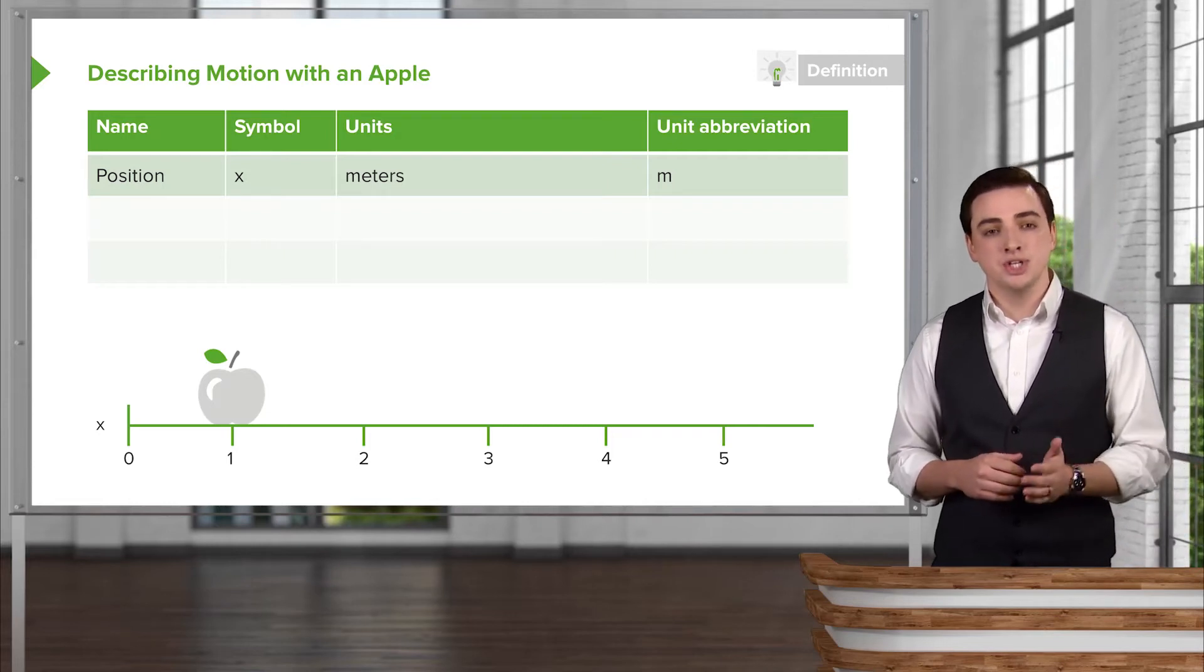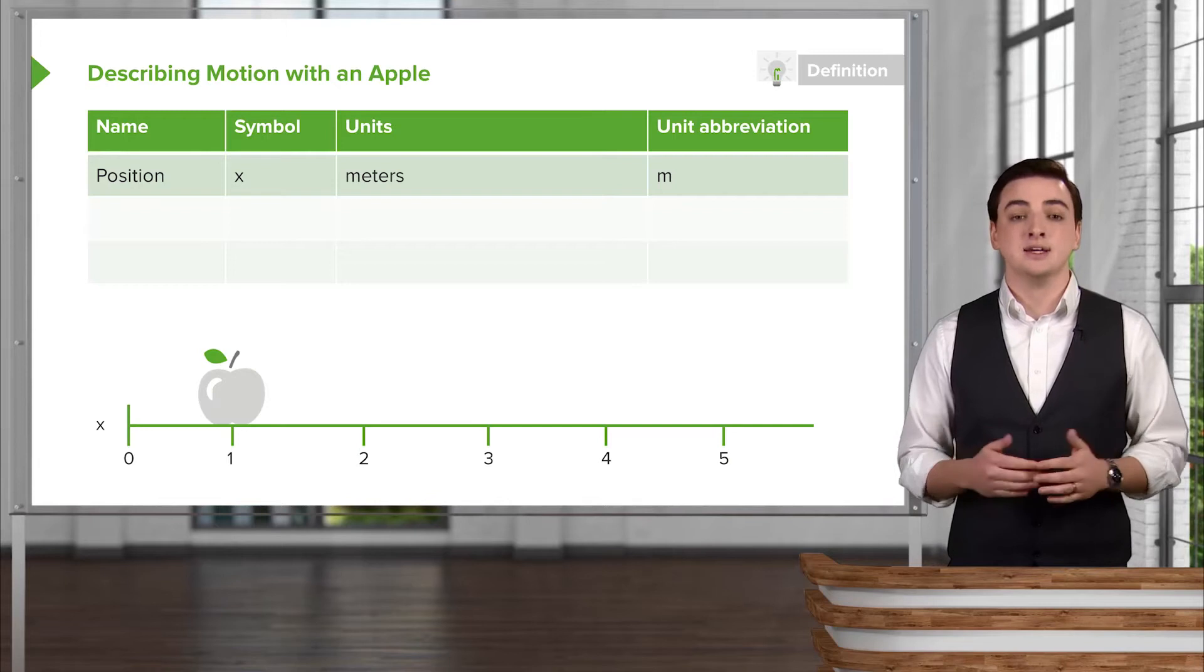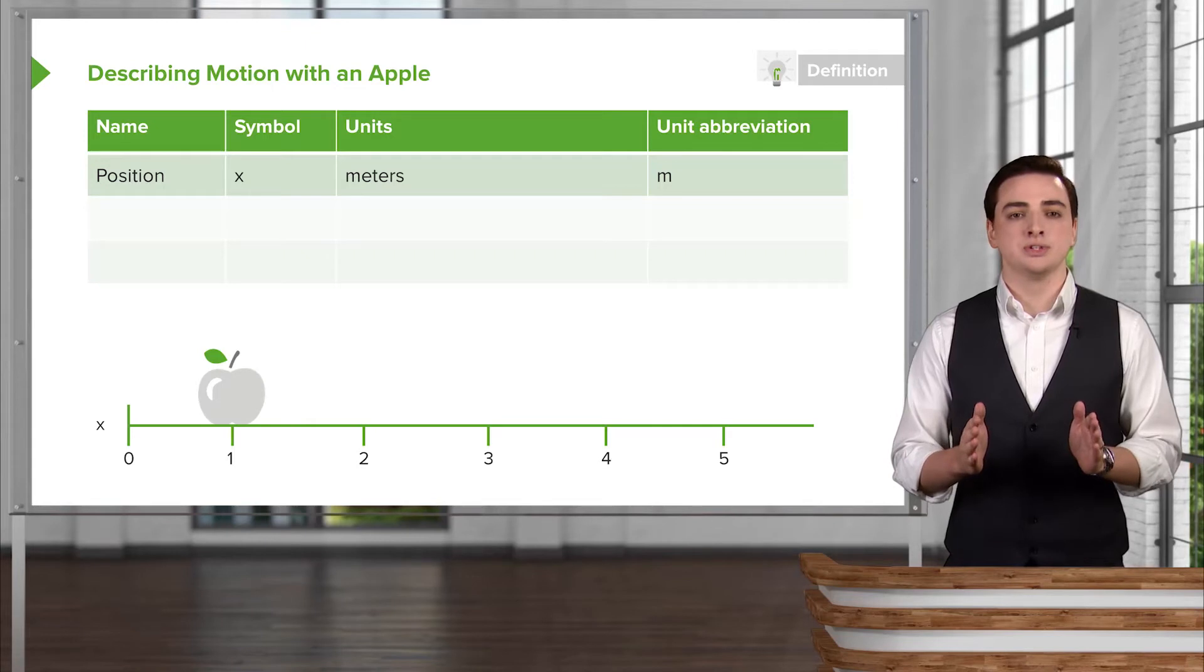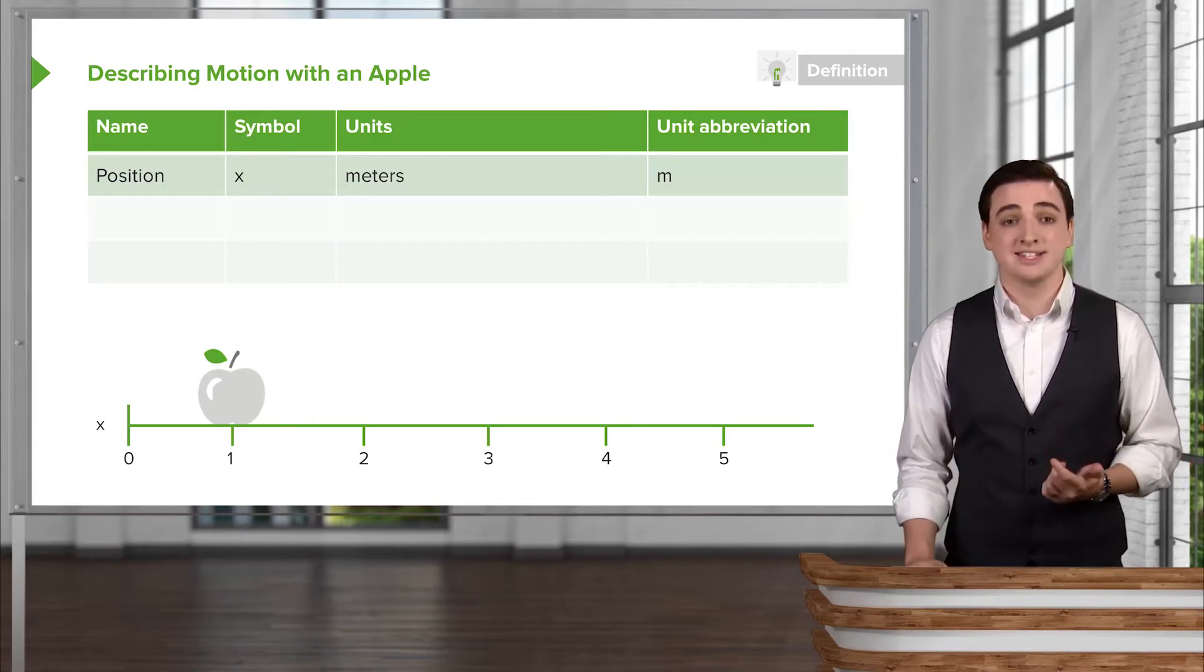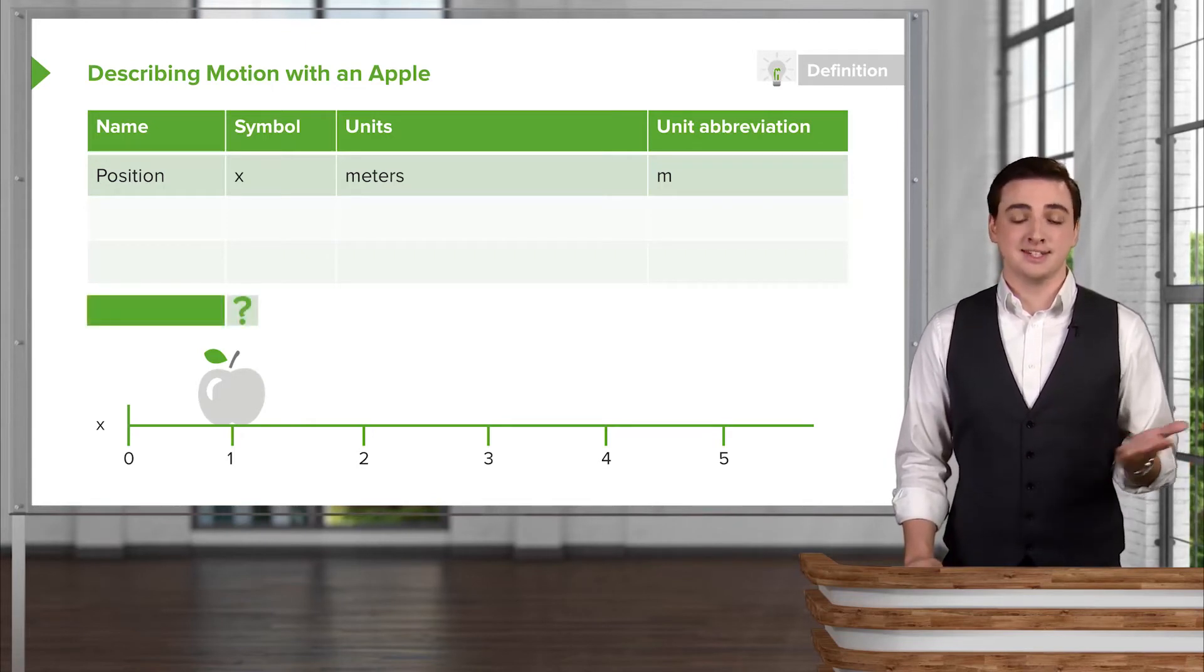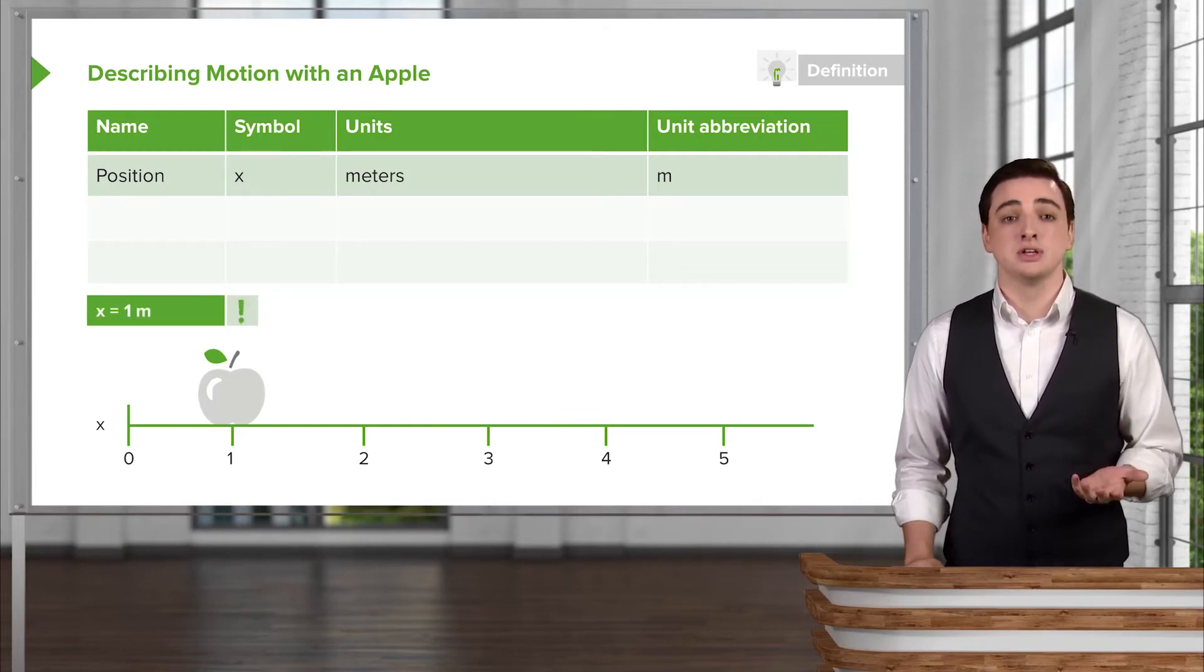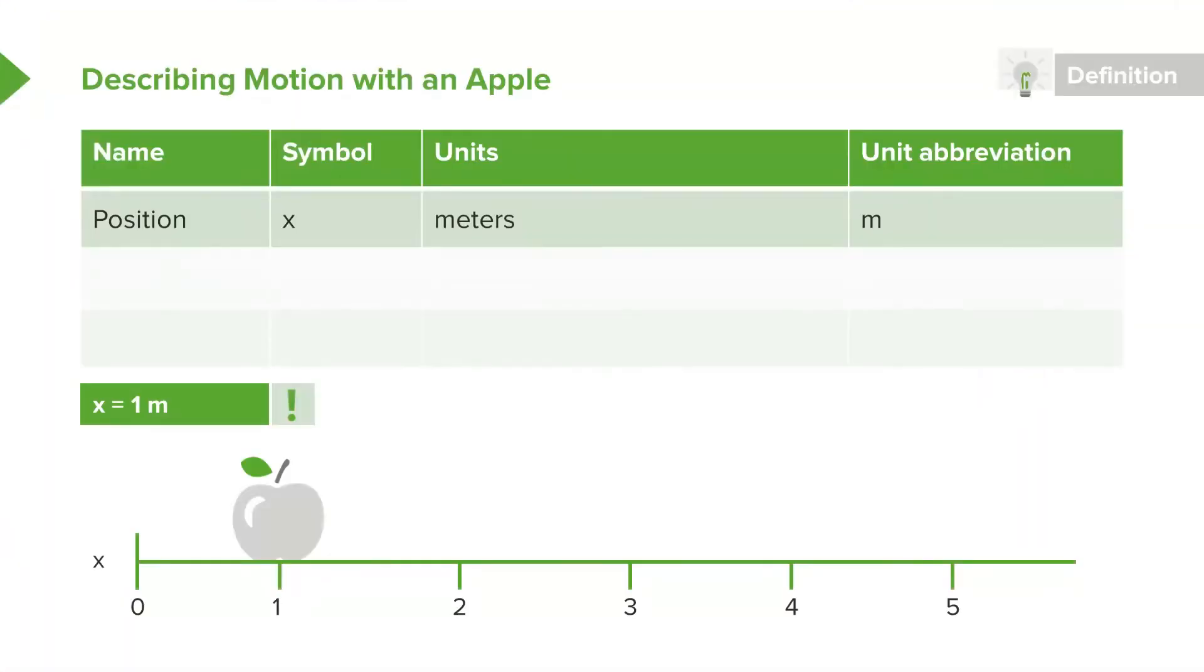And then we measure the position of the apple, which we call x, as how far in meters, which will be our units, is the apple from the origin. In this case if I asked you where this apple is, you could look at it and say, well, it looks like it's about one meter from our origin and that would be the position of this apple. The units that we use to measure these positions are meters like I said and the abbreviation for this unit of meters will be m. So if you see that m it's not minutes or anything else, it's the actual meters telling you where your object is.